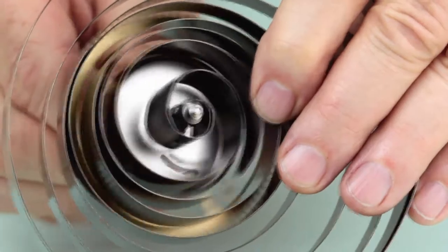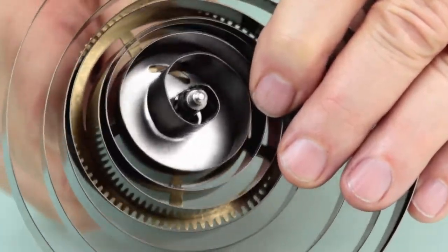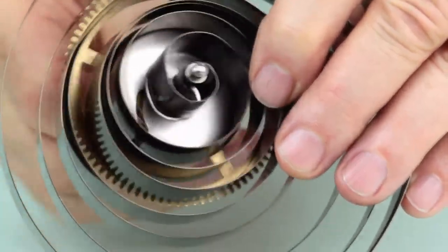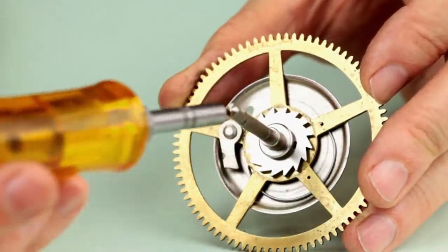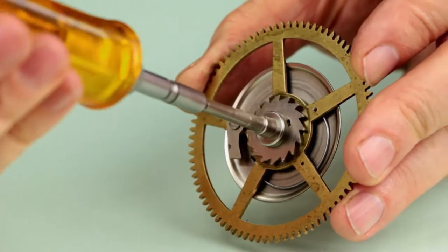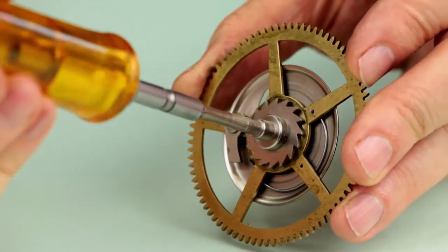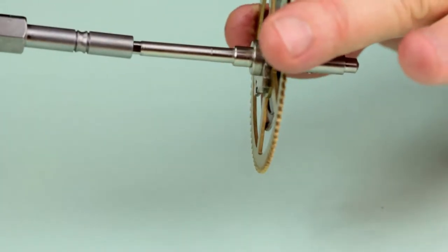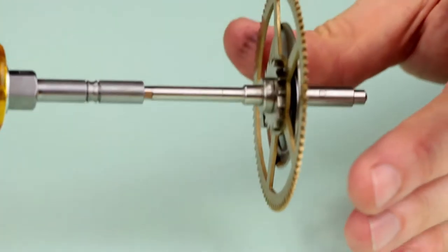The spring pulls on the hook of the winding arbor causing the arbor to rotate as the spring unwinds. Attached to the winding arbor is a ratchet wheel that turns with the arbor. Slipped over the winding arbor is the great wheel, which rests up against the ratchet wheel. The great wheel is a slip fit and is free to rotate.